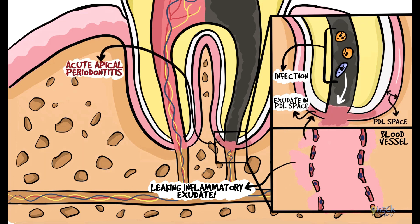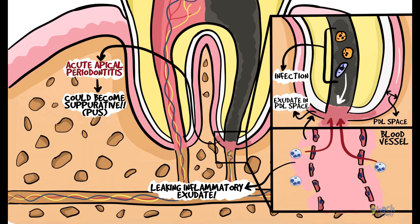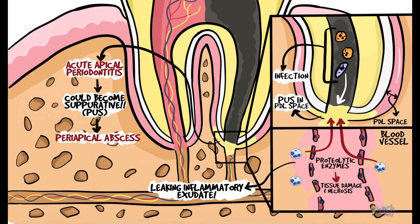This is an acute apical periodontitis, and in certain individuals this acute inflammatory process could exacerbate and become a suppurative process. Leukocytes recruited to the site of inflammation release numerous proteolytic enzymes in the environment, which may cause tissue damage and necrosis leading to an acute periapical abscess.